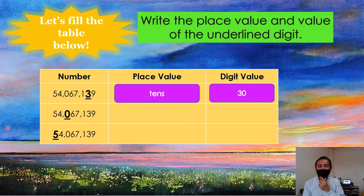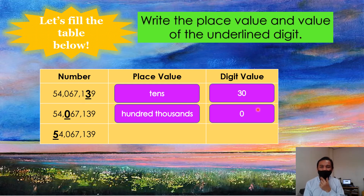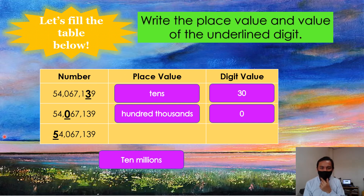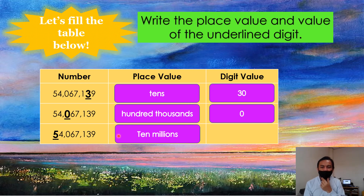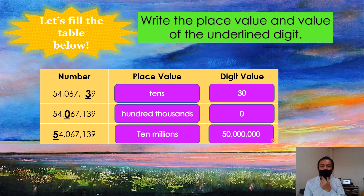What is the place value of 0? Yes, 100,000. Next, what is the digit value of 0? The digit value is 0. And last, what is the place value of 5? Yes, the place value is 10,000,000. And what is the digit value of 5? The digit value of 5 is 50,000,000.